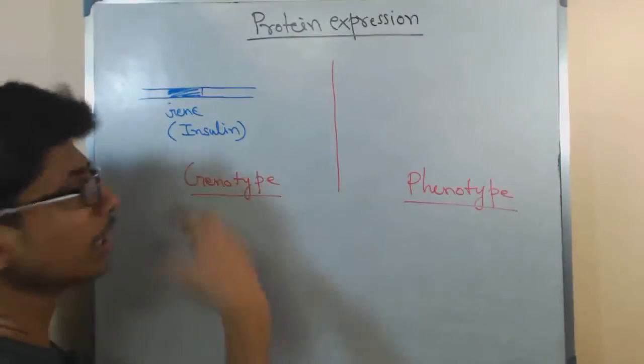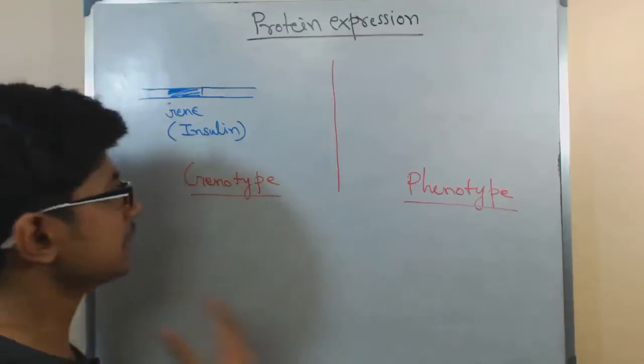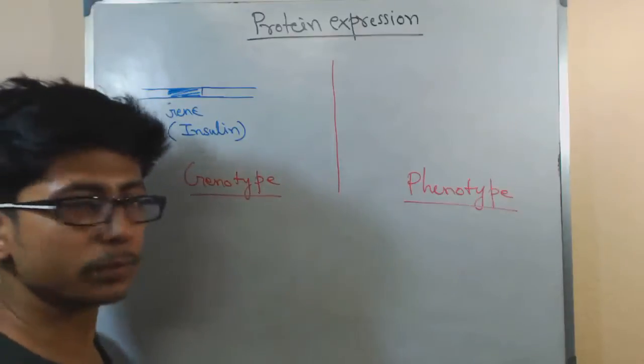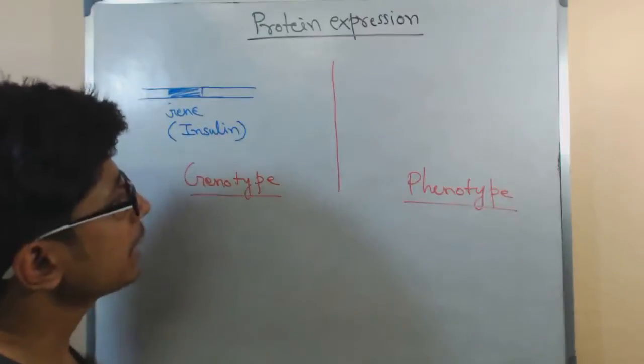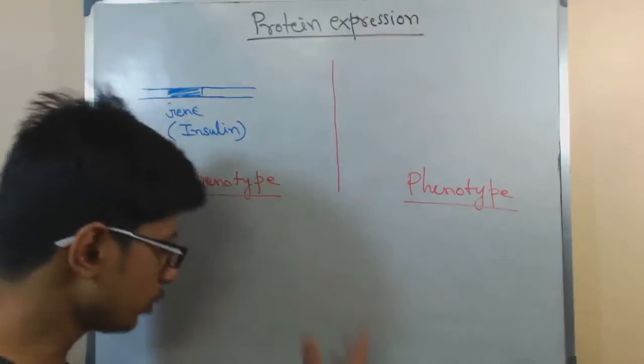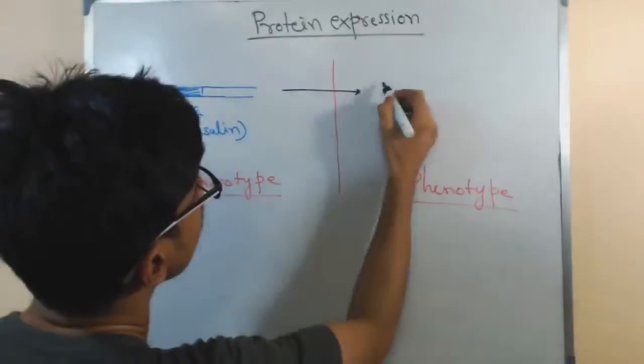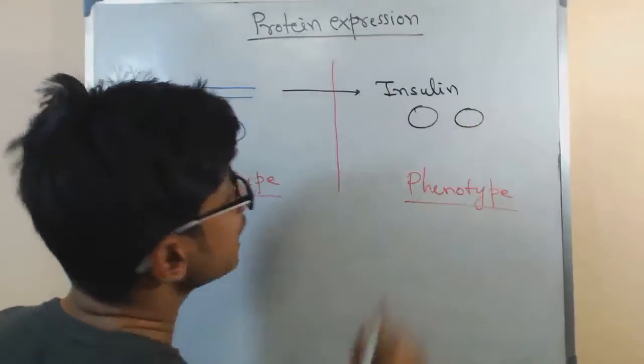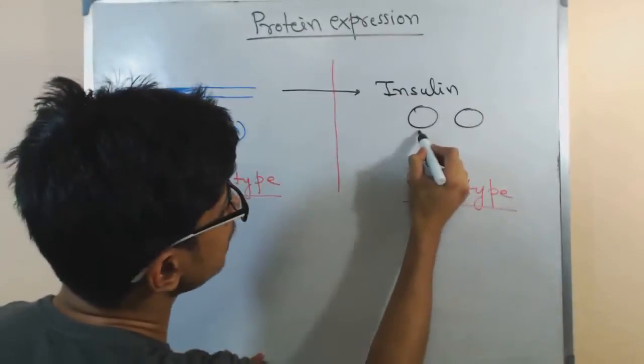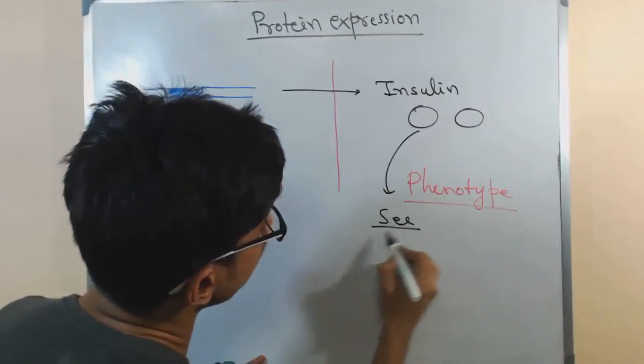Let's say the gene is for the insulin hormone. So that means the gene can code for the insulin protein. Now the gene is present there, so it's inside the genotype. Now once it produces the proteins, let's say here insulin, it produces this insulin protein. In that case we can actually see this or we can look at the effect.